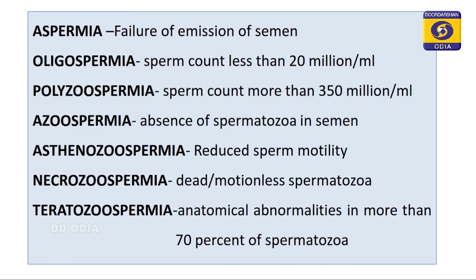Now let us look at some common terms associated with sperms that appear in competitive examinations. Aspermia means failure of ejaculation of semen. Oligospermia means sperm count is less than the normal 20 million per ml. Polyzoospermia means sperm count is more than 350 million per ml. Azoospermia means no sperm in the semen.